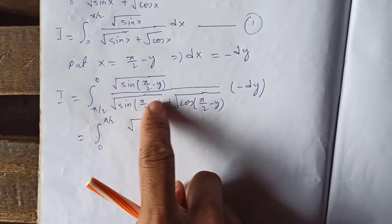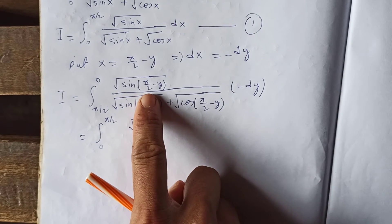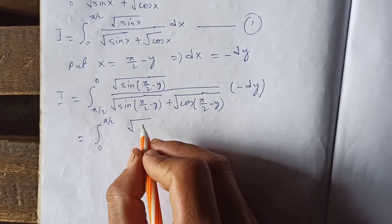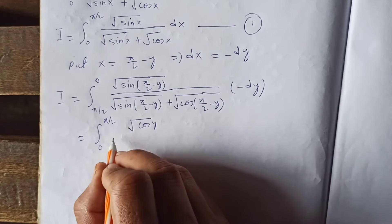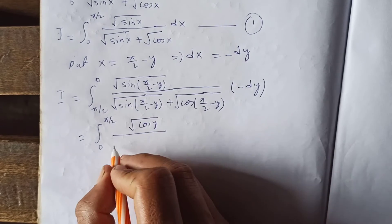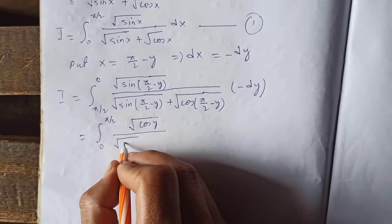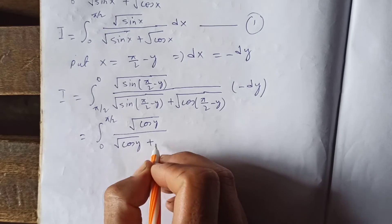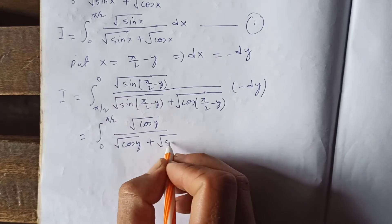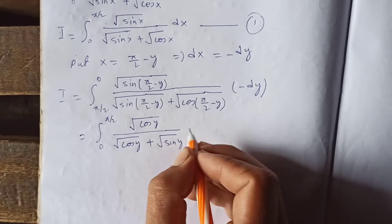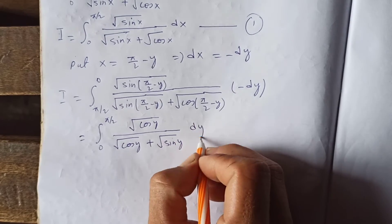After substitution, sin(π/2 − y) becomes cos y and cos(π/2 − y) becomes sin y. So the new integral is √(cos y) divided by (√(cos y) + √(sin y)) dy. Let's call this equation 2.